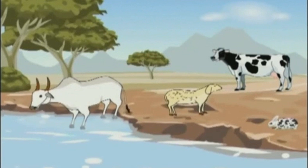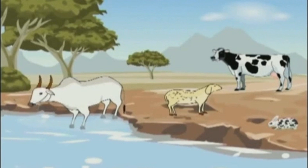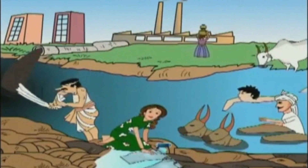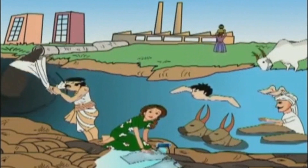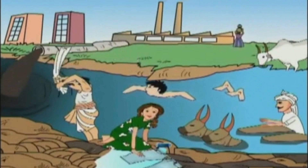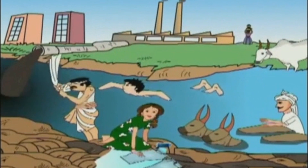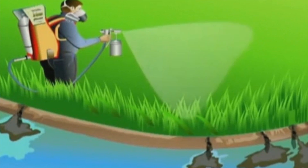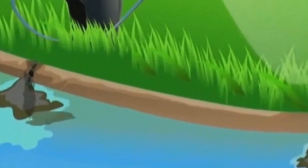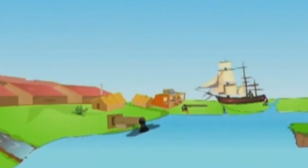The health of both wild and domesticated terrestrial animals is also affected when they drink polluted water. Water is polluted either intentionally or unintentionally by industrial waste, by agricultural operations, and commodity waste.